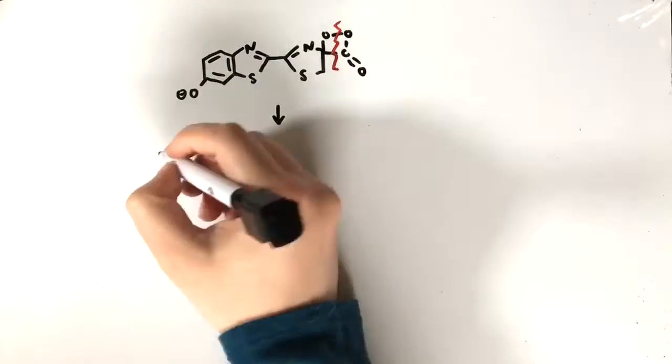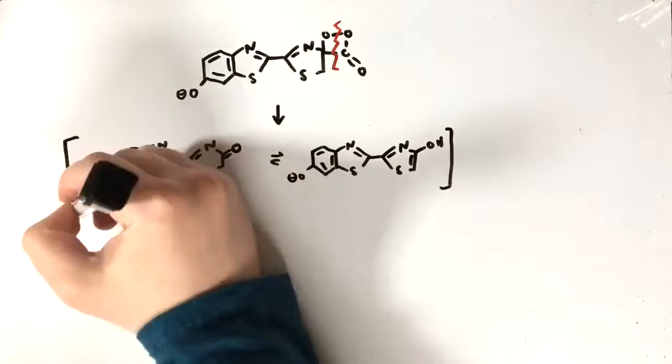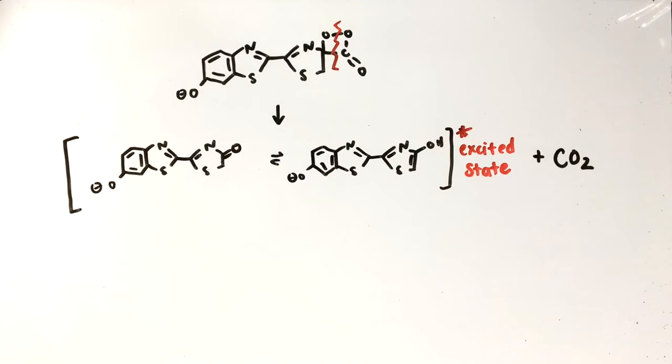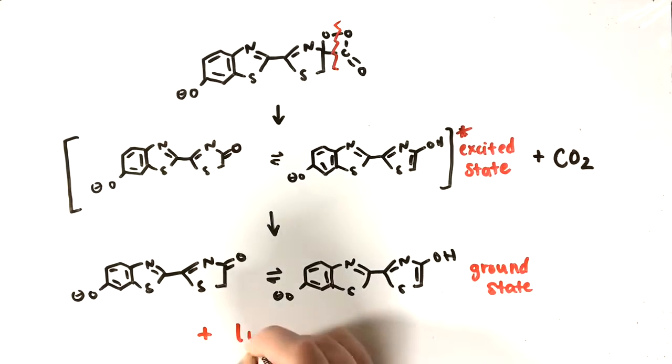The ring spontaneously breaks and we are left with electronically excited oxyluciferin and carbon dioxide. When oxyluciferin returns to the ground state, energy is released in the form of a photon of light.